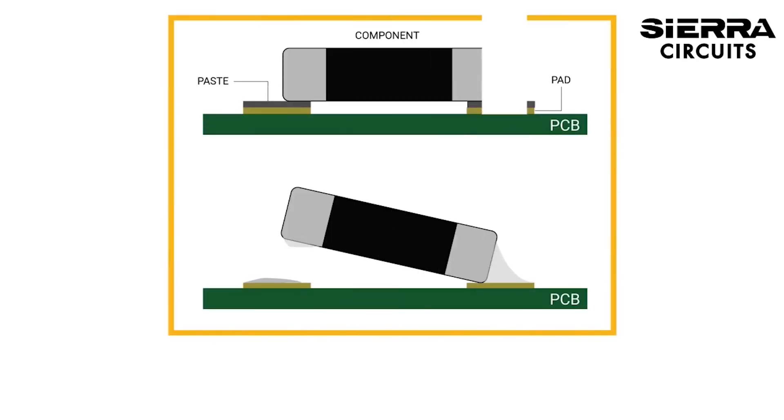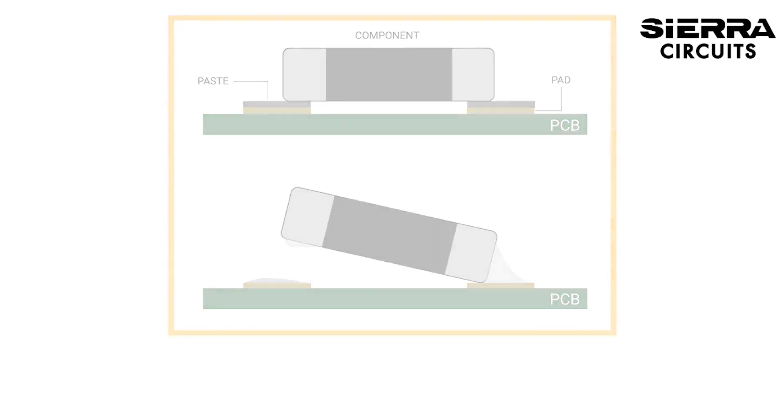Tombstoning, or the Manhattan effect, occurs when a chip component is partially or entirely pulled off from the pad into a vertical position with one end soldered. Uneven heating, varying heat sinks, and insufficient adhesive force of the solder paste contribute to tombstoning. To mitigate this, ensure the component covers at least 50% of both pads, place components accurately, and maintain a high preheat temperature.